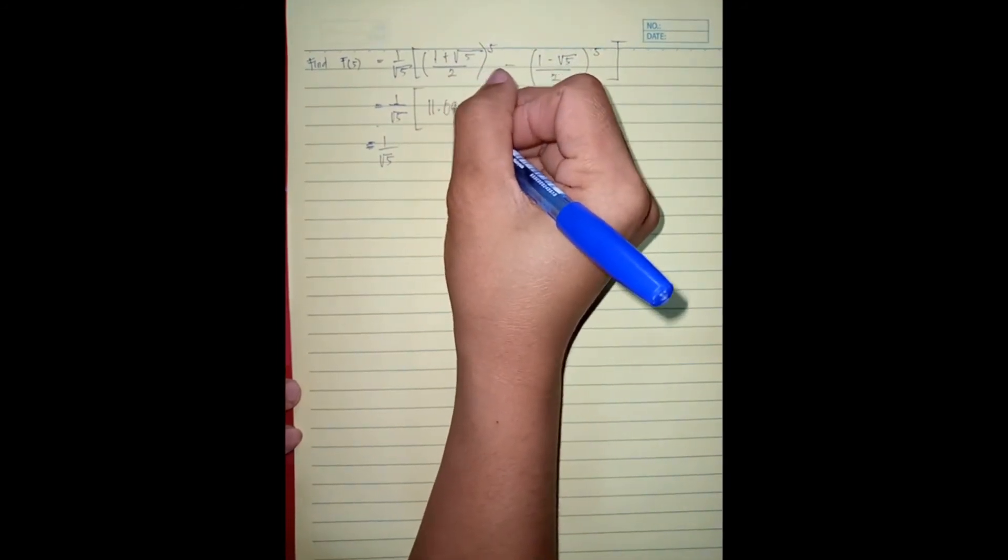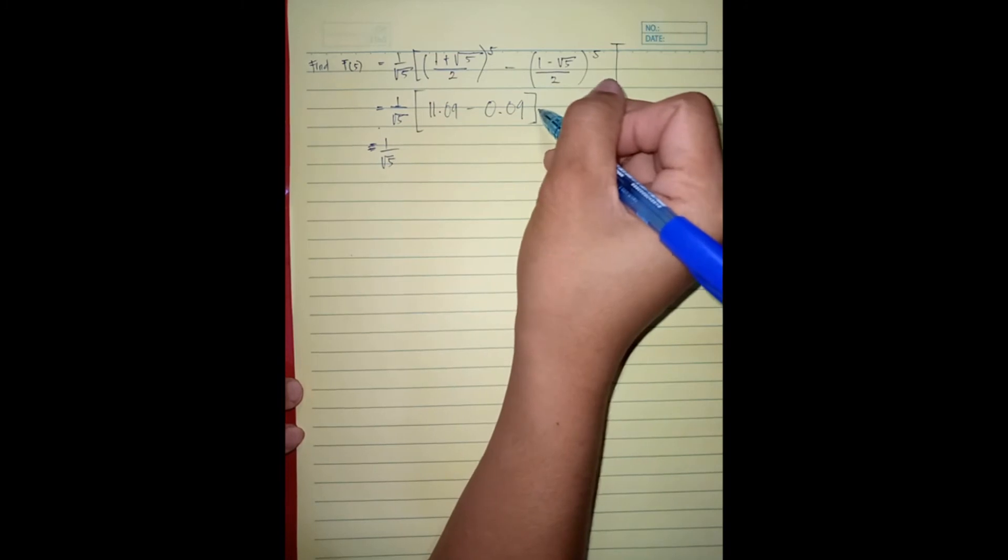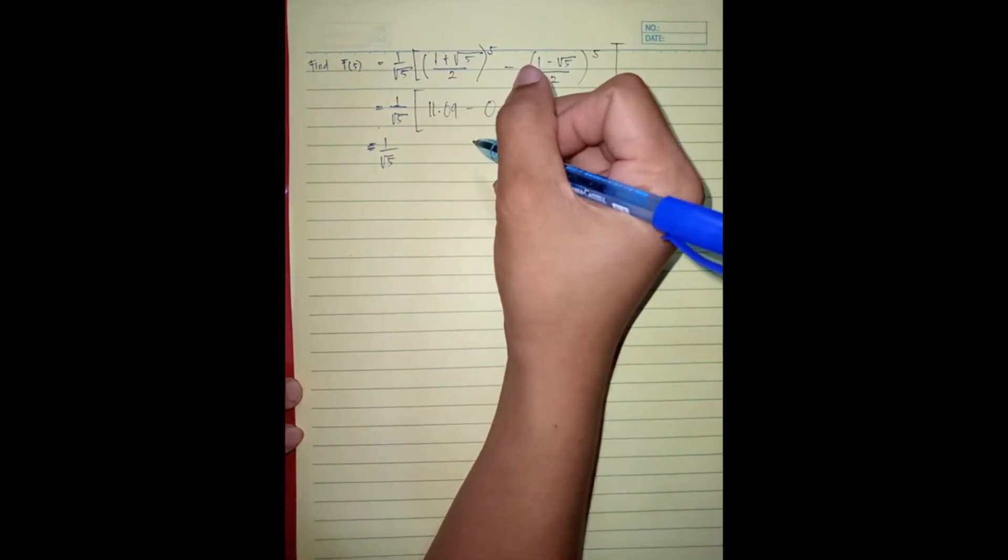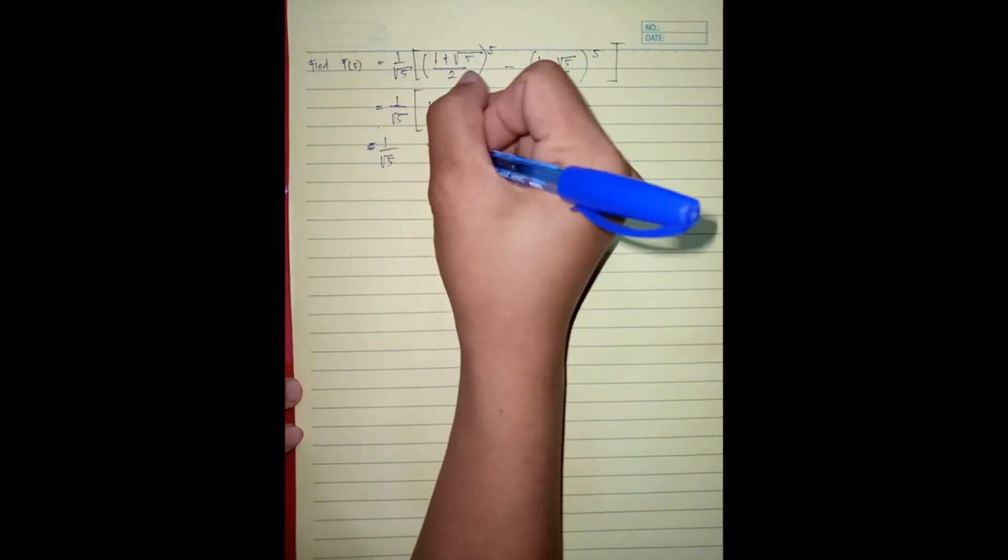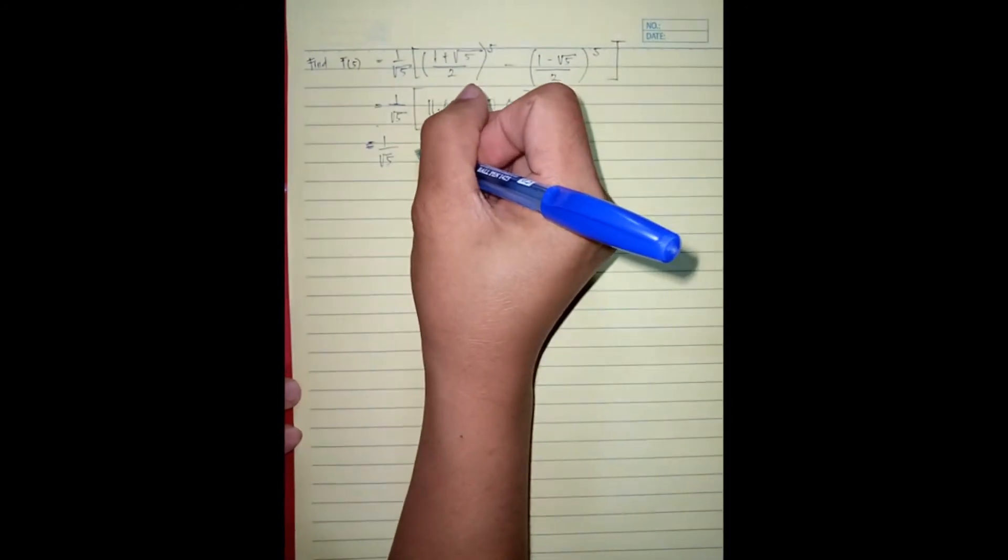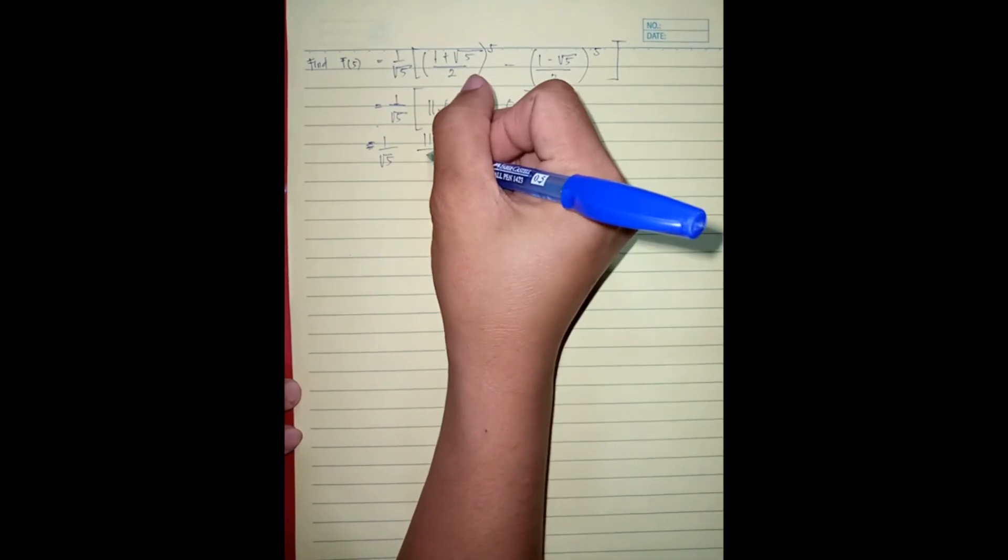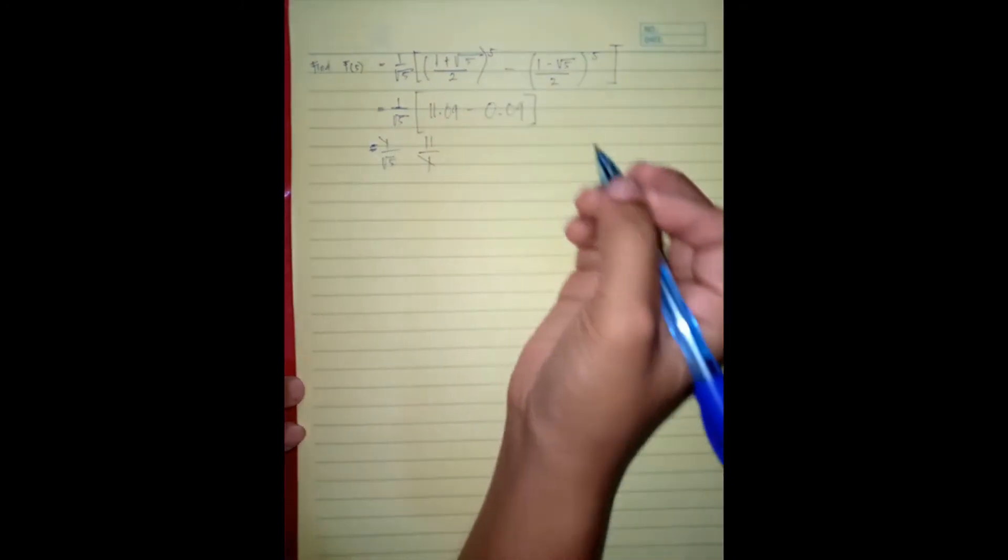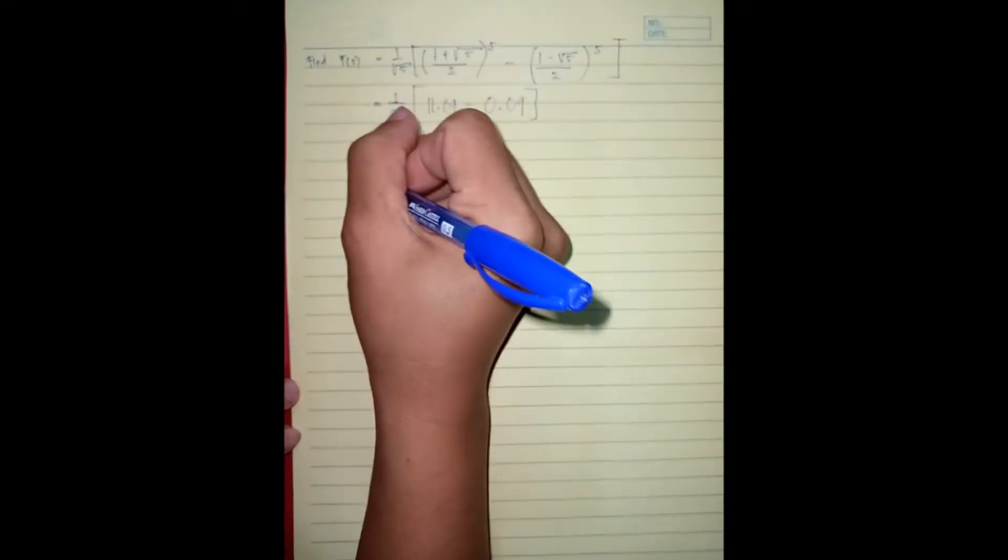11.09 minus 0.09 is equals to 11. So kaya ano na, kailangan natin mag-cross multiply ulit, lagyan natin dito yung one. Cancel the one kasi ano na.